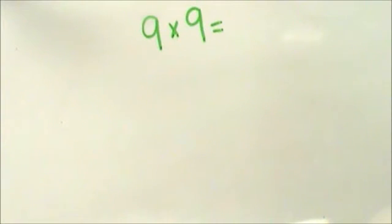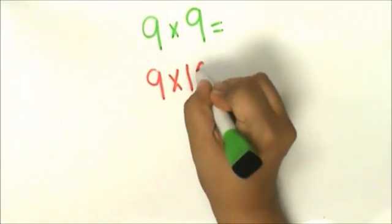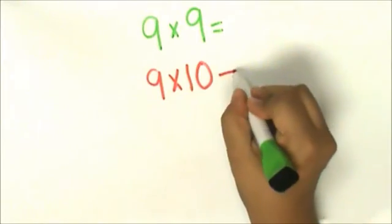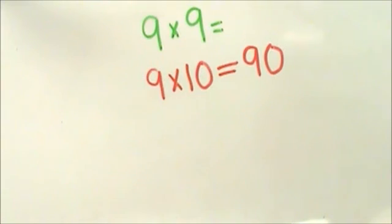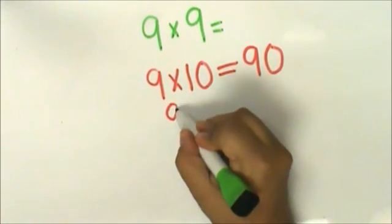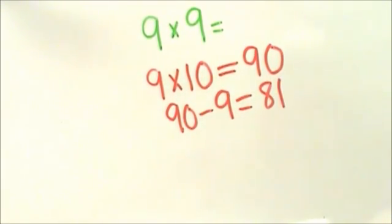When you multiply by 9, you can use your 10 facts to make problems simpler. Let's try 9 times 9. This time, I'm going to add a group of 9 and multiply 9 times 10. 9 times 10 is 90. Now we need to subtract that group of 9 that we added. 90 minus 9 equals 81. The product of 9 and 9 is 81.